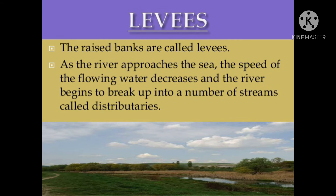Next is levees. The raised banks are called levees. As the river approaches the sea, the speed of the flowing water decreases and the river begins to break up into a number of streams, which are called distributaries.